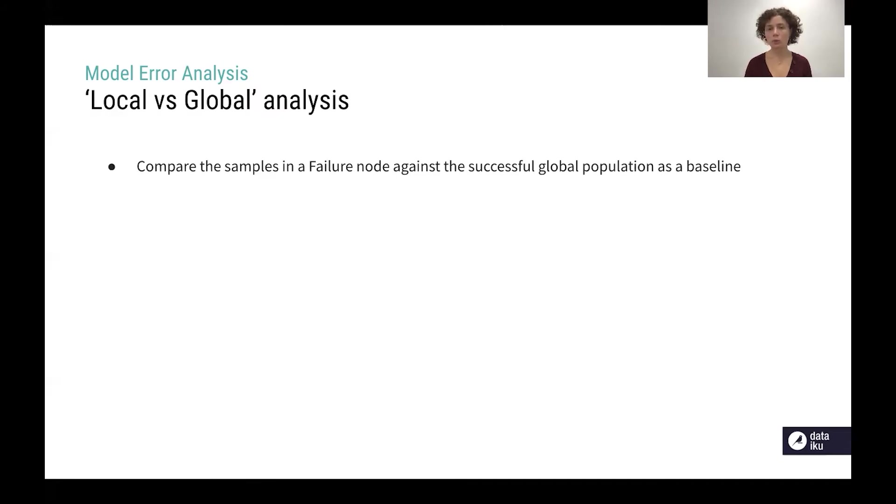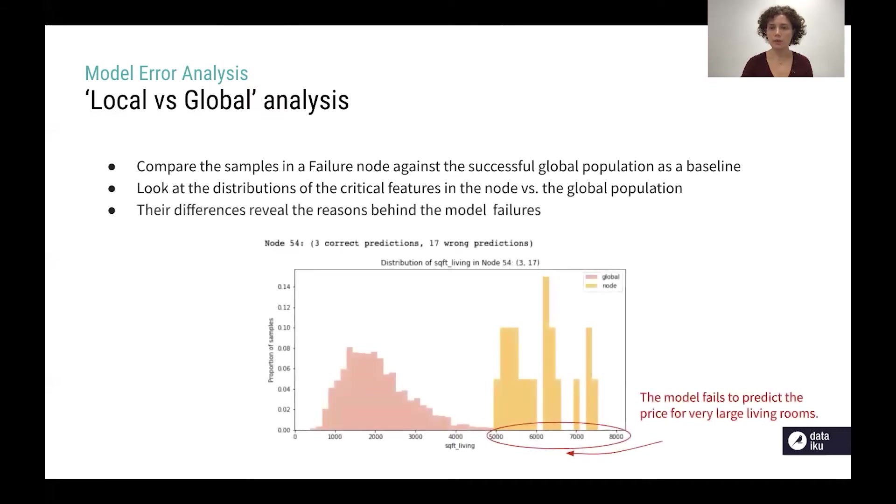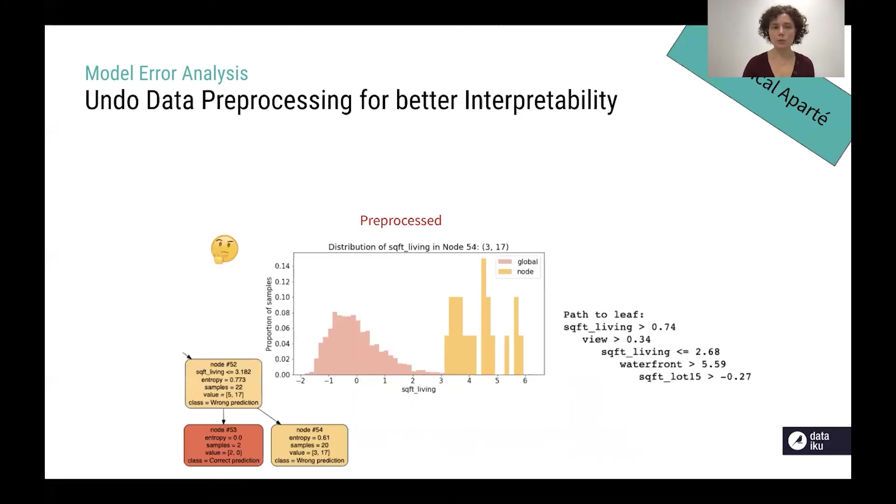In particular we can compare all the samples that are in a failure node against the global population which is mainly successful if we've done a good job with the model. This could be like a baseline, a background against which we compare what's going on in the failure node. If we look at the distribution of the critical features in the node versus this global successful population and there are differences, we can have an idea what are the subpopulation on which the model is failing. Like in this example, if we take back the example of a primary model predicting the price of houses, we could understand that the model is failing to predict the price for houses with very large living rooms maybe because these are underrepresented in our training set.